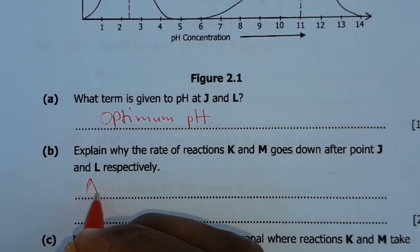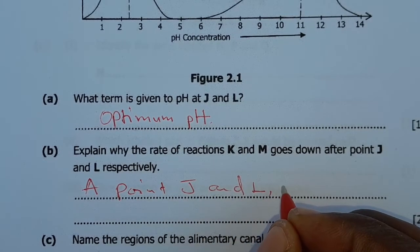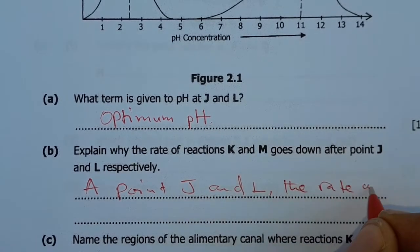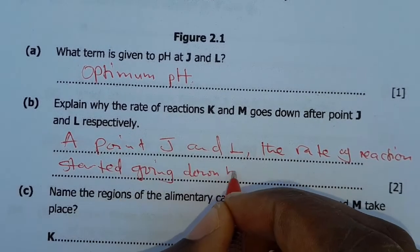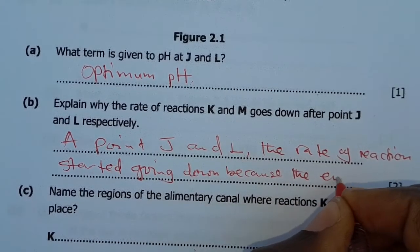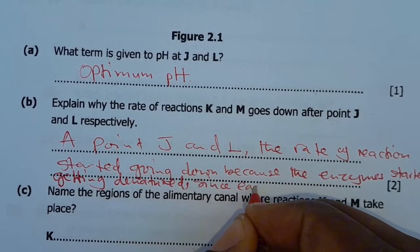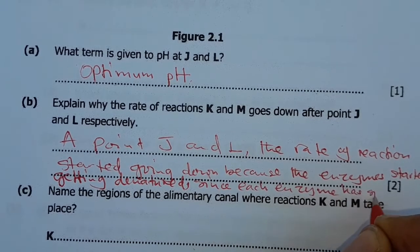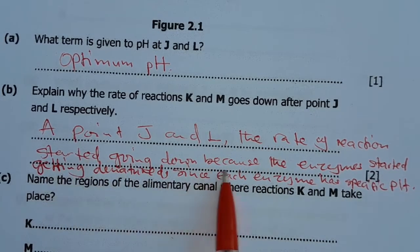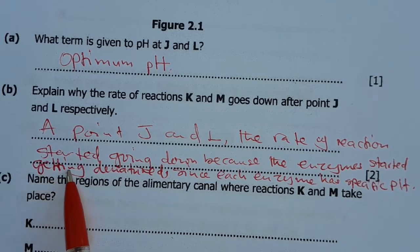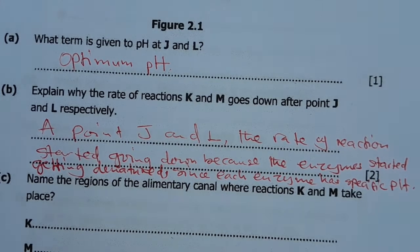So you're going to say, at point J and L, which is the optimum pH, the rate of reaction started going down because the enzymes started getting denatured since each enzyme has a specific pH.